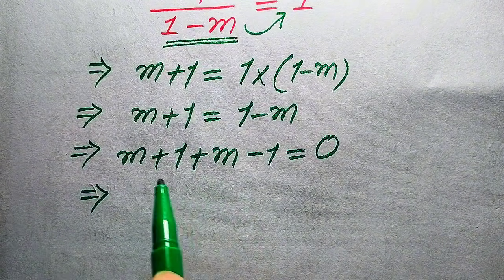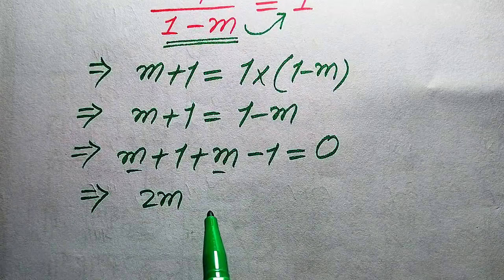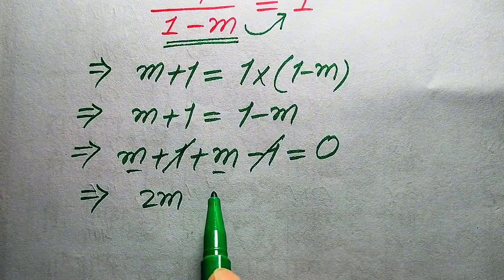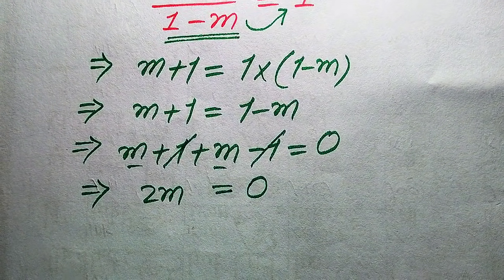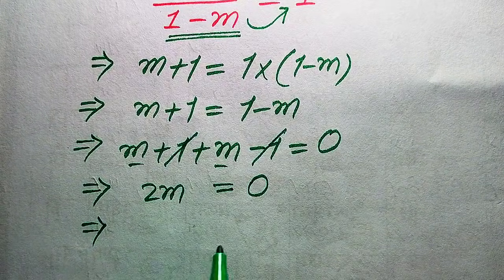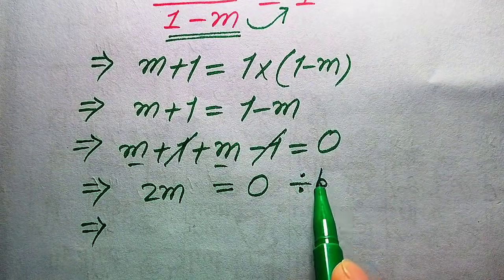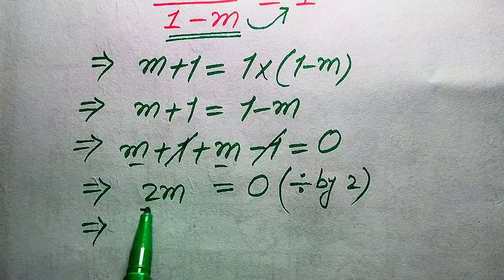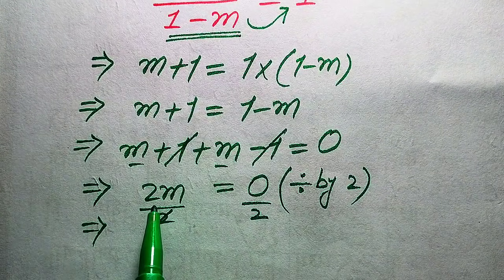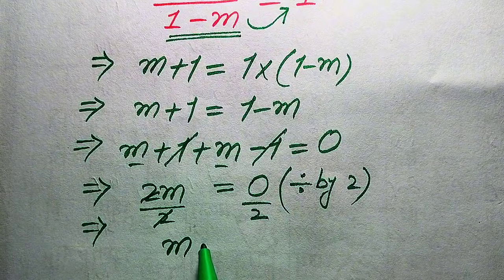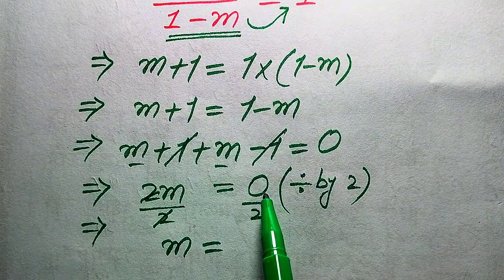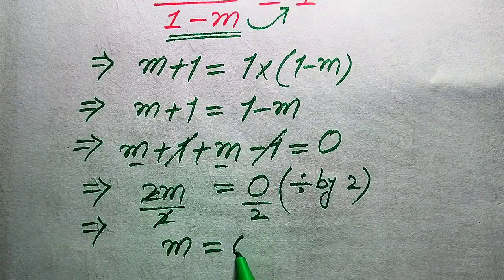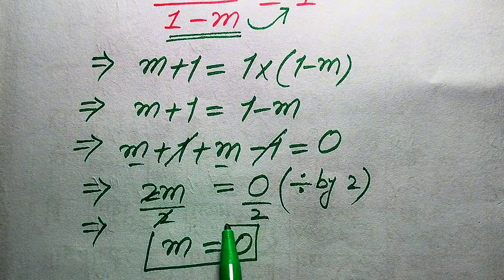Further simplifying: m plus m equals 2m. The negative 1 and positive 1 cancel out, and the whole equation equals 0 — so we have 2m = 0. Since our target is to find the value of m, we divide both sides by 2. The 2s cancel and we get m equals 0. Dividing 0 by any number always gives 0, so the value of m is 0.